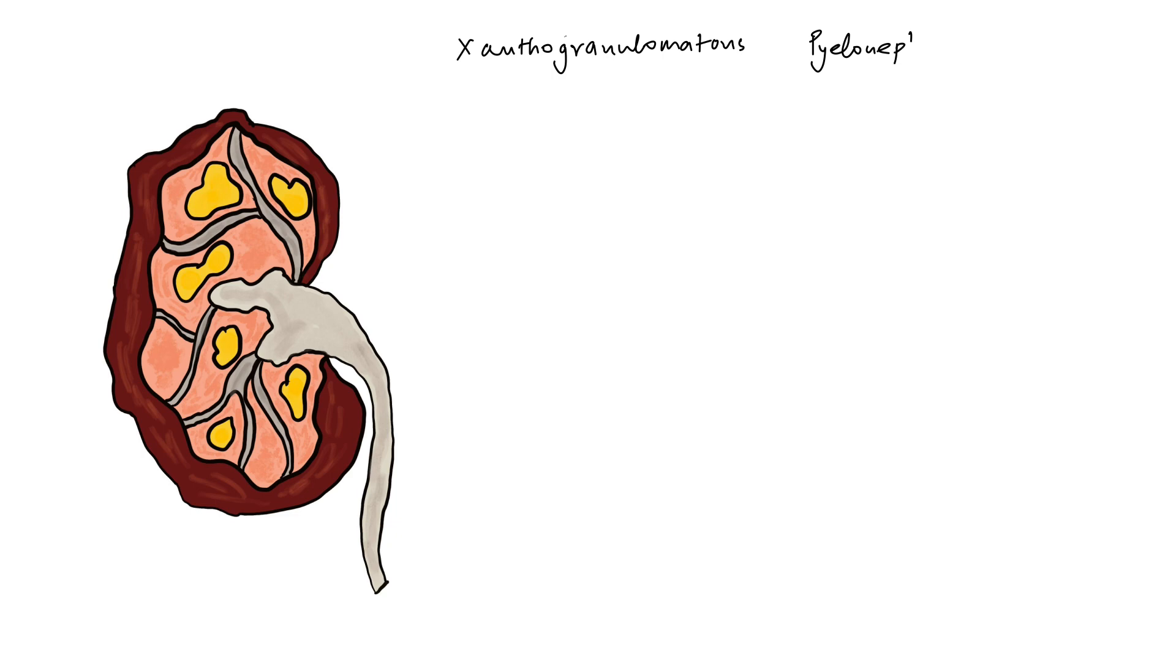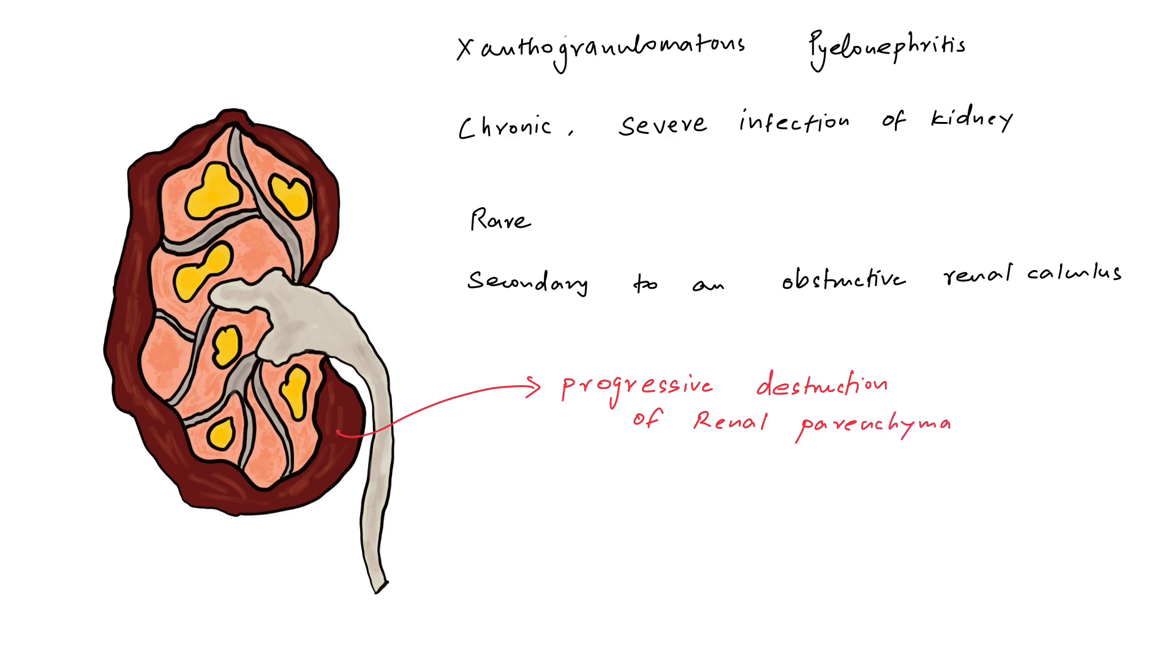Xanthogranulomatous pyelonephritis is a chronic severe infection of the kidney. It is a rare condition thought to arise secondary to an obstructive renal calculus. The problem with this disease is that it causes progressive destruction of the renal parenchyma, rendering the kidney non-functional.